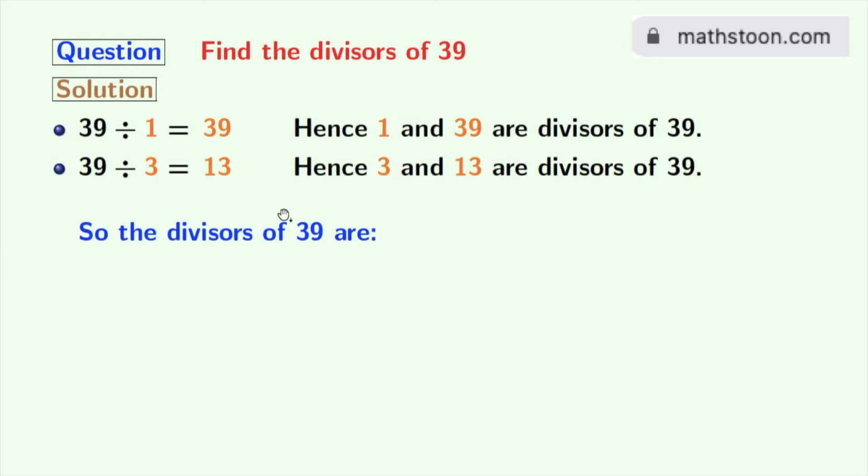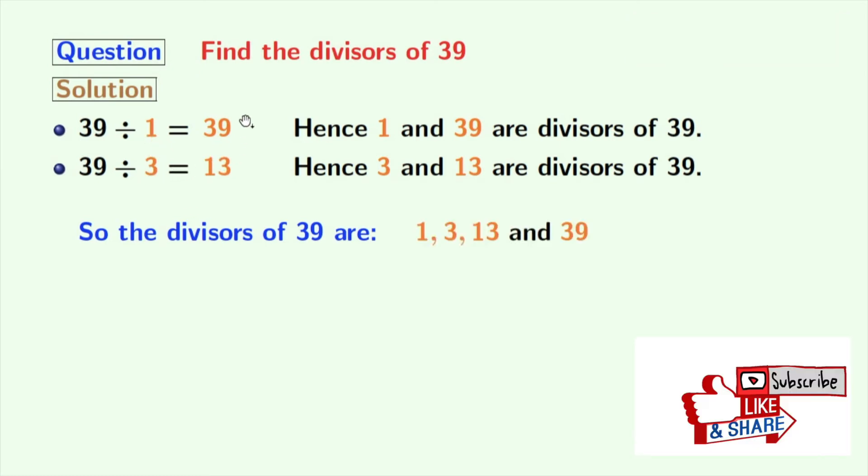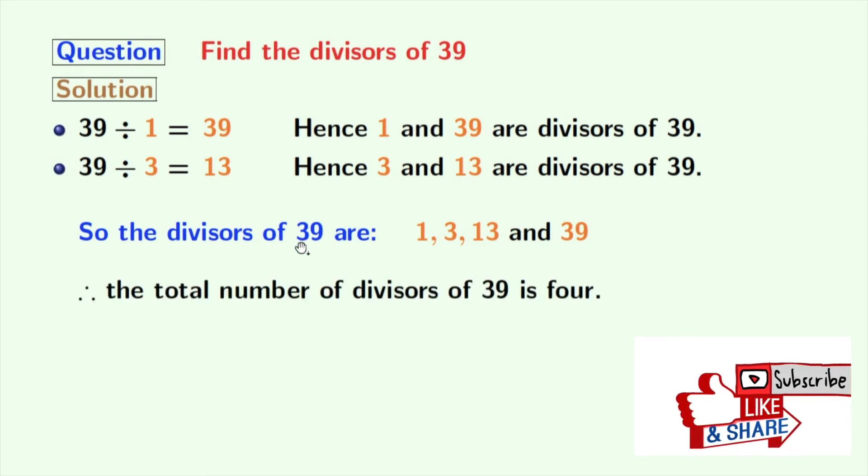Now, we have all the divisors of 39 in orange colors. These numbers are 1, 3, 13, and 39. So, the total number of divisors of 39 is 4.